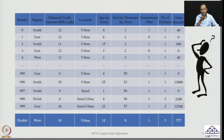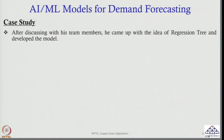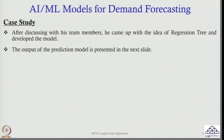With that objective in mind, the manager came up with the idea of regression tree and decided to develop the model. There are many AI/ML models but the team decided they will develop a regression tree model. After developing the model, they got the output and the output of the prediction model is presented in the next slide. We will take some time to explain this output, and then go back and explain how this model has been developed and what is the background algorithm.